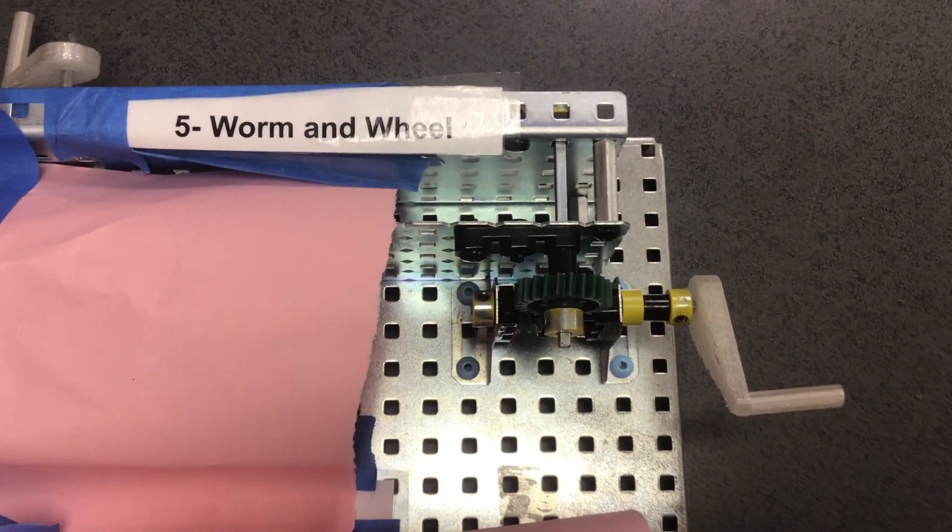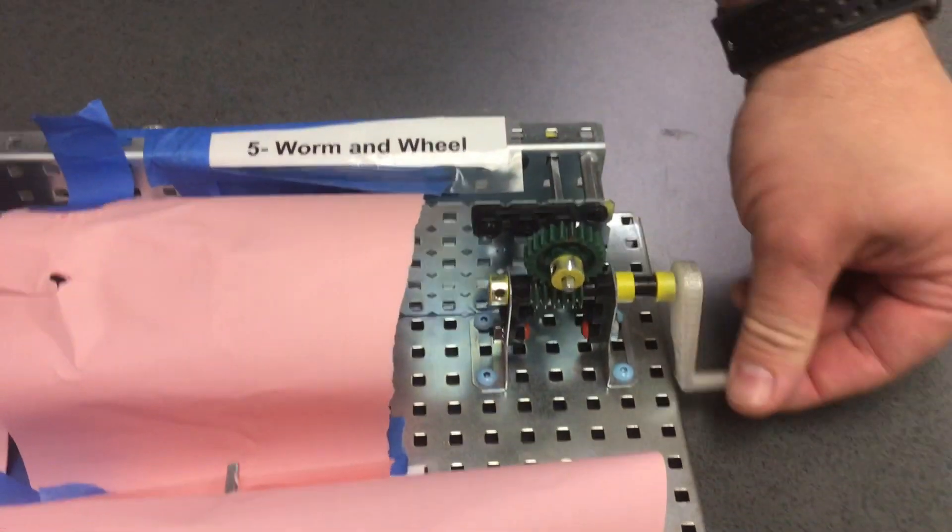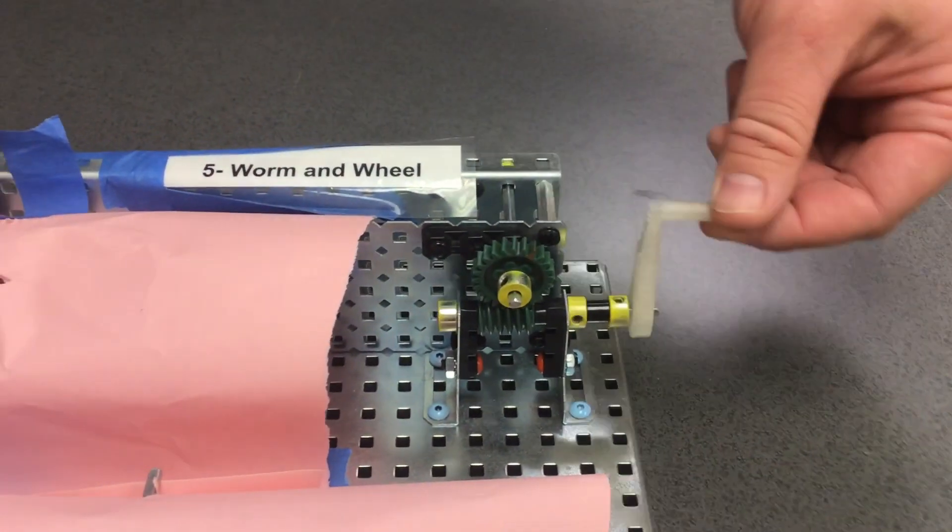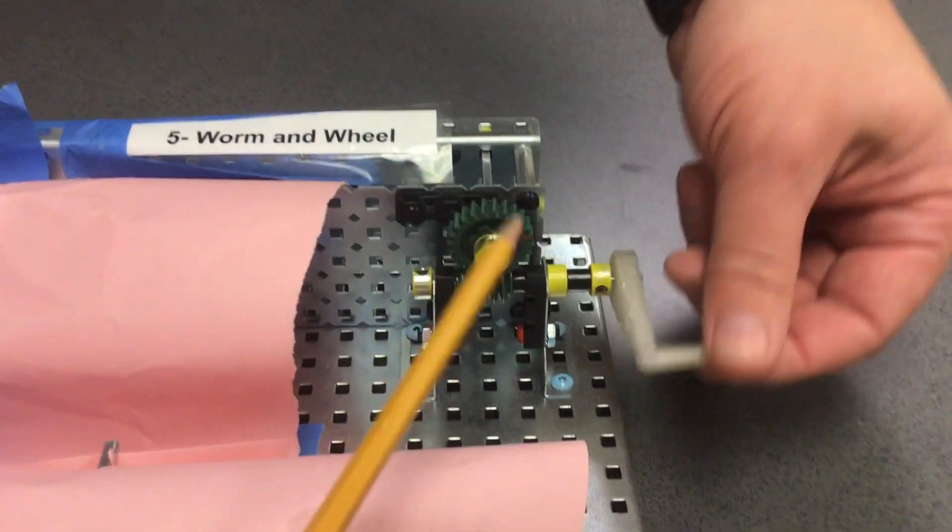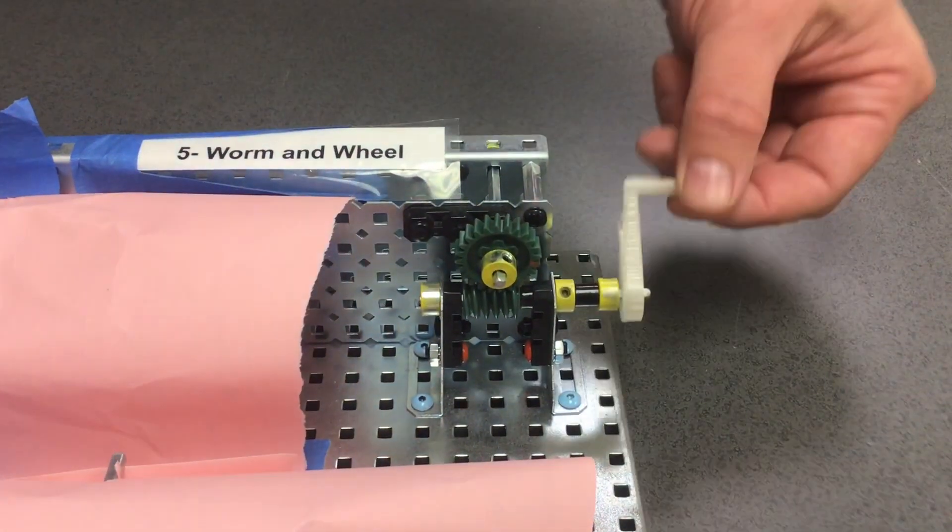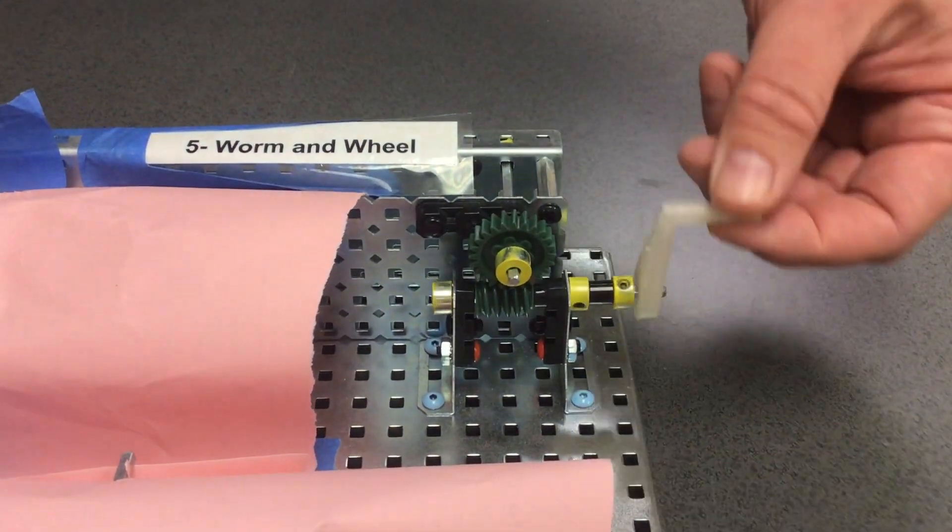Let's talk about the types of movement that the worm and wheel has. The input is a standard rotary with a handle and you'll notice the output is a rotary going at the 90 degree angle. So our input and output movements are both rotary movement.